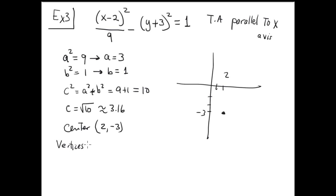Vertex is located at the distance A, which is 3, in both directions, left and right. You're subtracting 3 from the X component. So 2 minus 3 is negative 1. Negative 1 comma negative 3, approximately like that. And adding 3: 2 plus 3 is 5. So we get 5 comma negative 3.